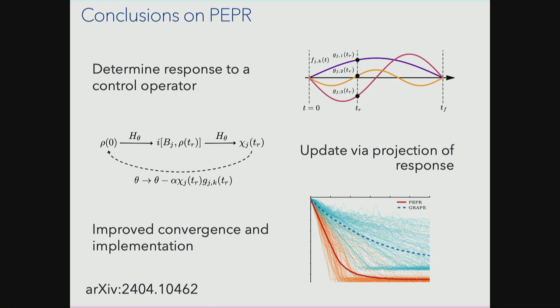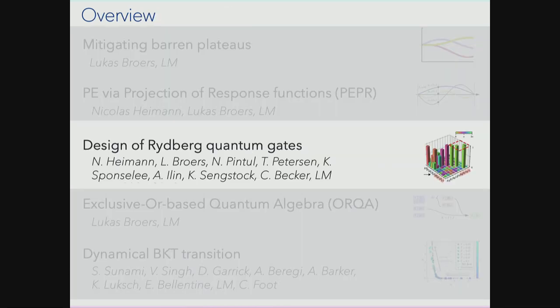In conclusion on the PEPR method: the ingredients are choosing a random time, a random control operator, determining the response of the fidelity to that perturbation, then updating your trainable parameters by projecting the response onto the mode functions. We find both improved convergence speed and a lower final infidelity floor compared to typical GRAPE realizations. This appeared on the archive this morning.